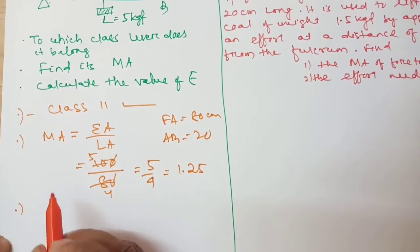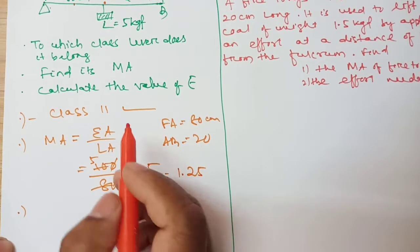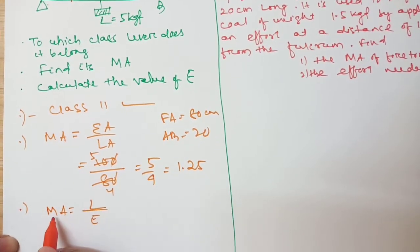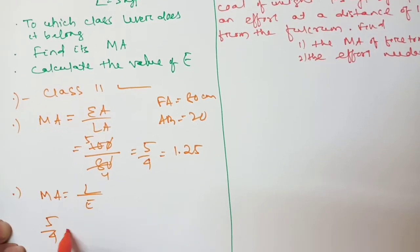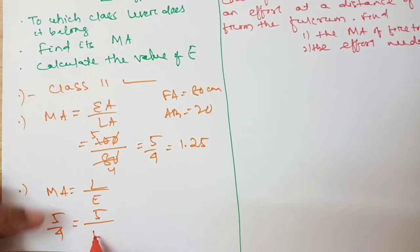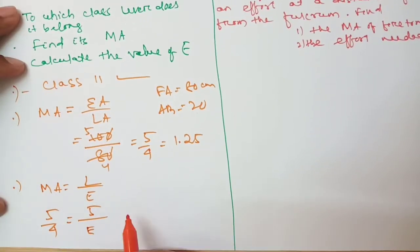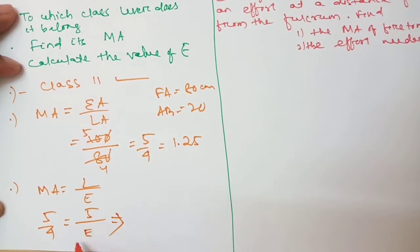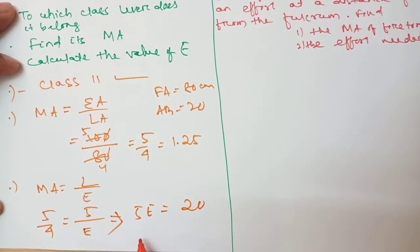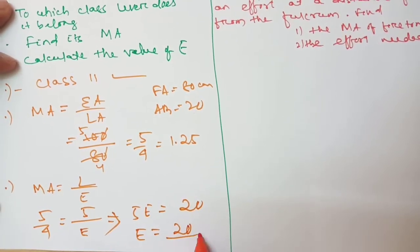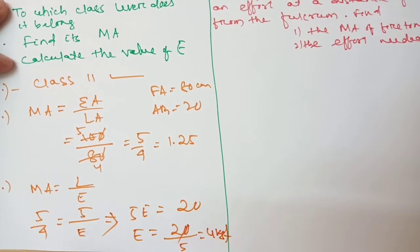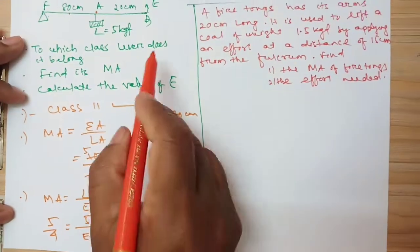Third question: calculate the value of effort. Using the formula MA = Load by Effort, we have 5 by 4 = 5 kgf (load) by effort. Solving: effort E = 20 by 5 = 4 kgf. So the effort is 4 kgf.